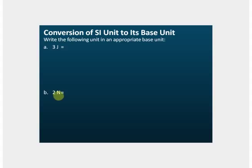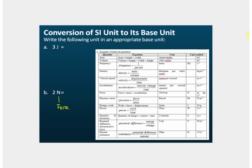To rewrite a derived unit to its appropriate base units, we need to know the equation for that quantity. Newton is the unit of force, so to do the conversion we need to know the equation for force. From the list, the equation for force is: force equals mass multiplied by acceleration.